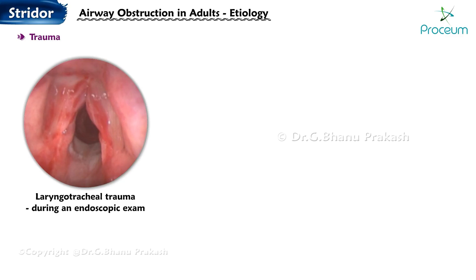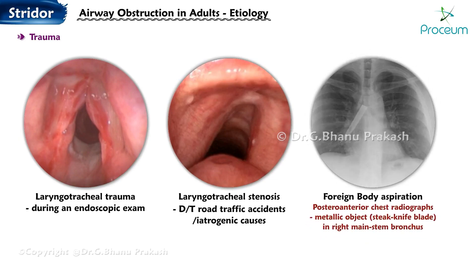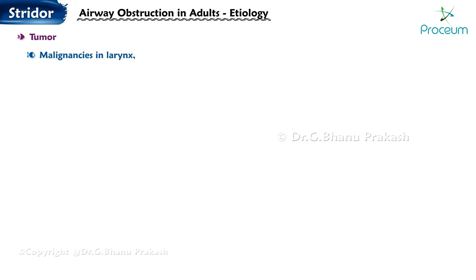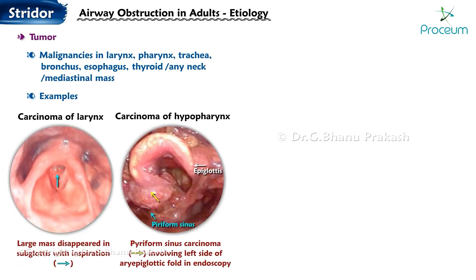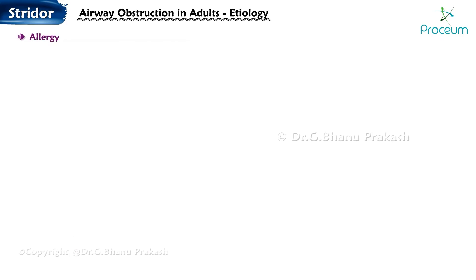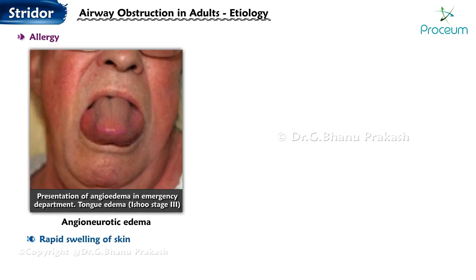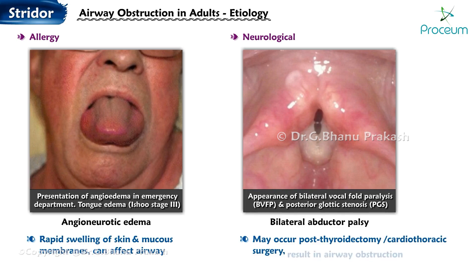Causes of Airway Obstruction in Adults. Trauma: laryngotracheal trauma, laryngotracheal stenosis — for example, due to road traffic accidents or iatrogenic causes — and foreign body aspiration. Tumor: malignancies in the larynx, pharynx, trachea, bronchus, esophagus, thyroid, or any neck or mediastinal mass — examples include carcinoma of the larynx and carcinoma of the hypopharynx. Infection: conditions such as tuberculosis, laryngitis, and neck space infections can lead to airway obstruction. Allergy: angioneurotic edema, an allergic reaction causing rapid swelling of the skin and mucous membranes, can affect the airway. Neurological: bilateral abductor palsy, which may occur post-thyroidectomy or cardiothoracic surgery, can result in airway obstruction.